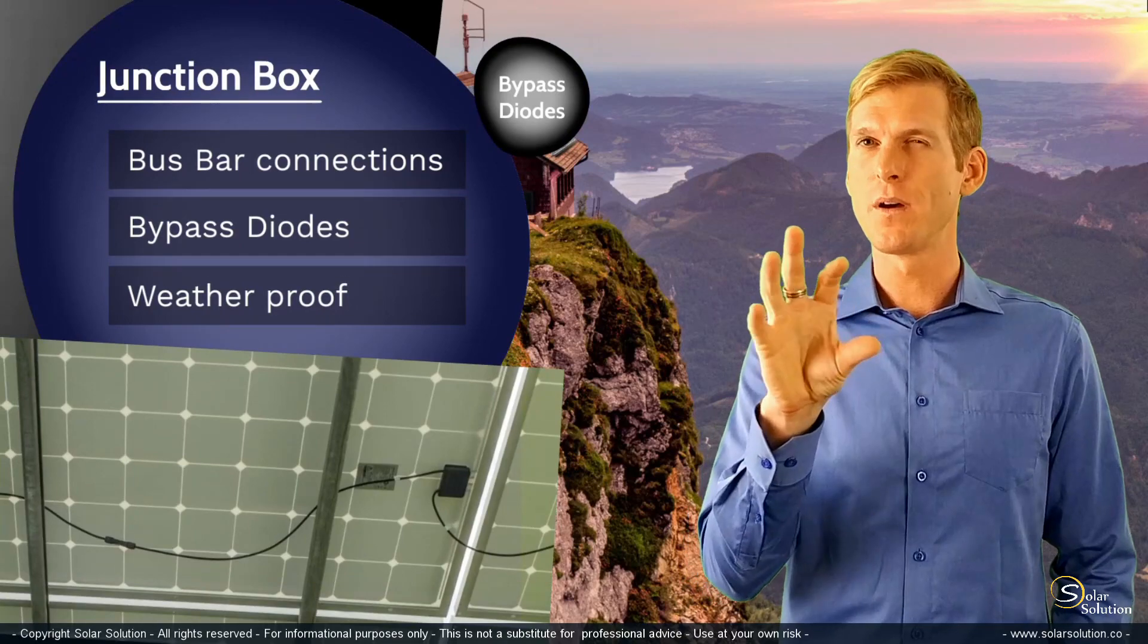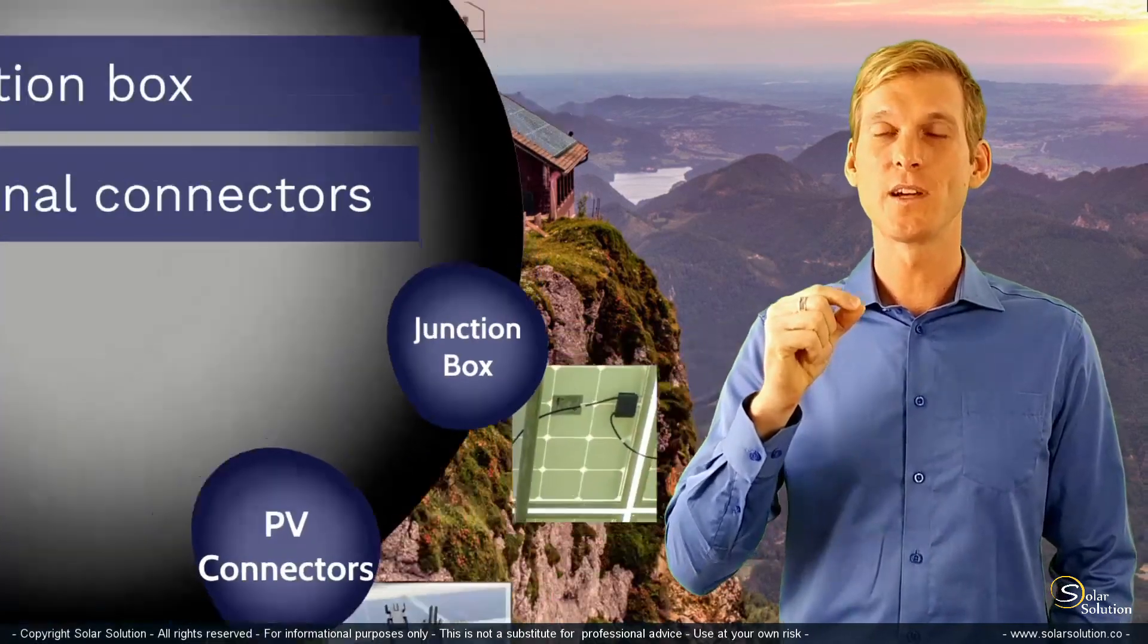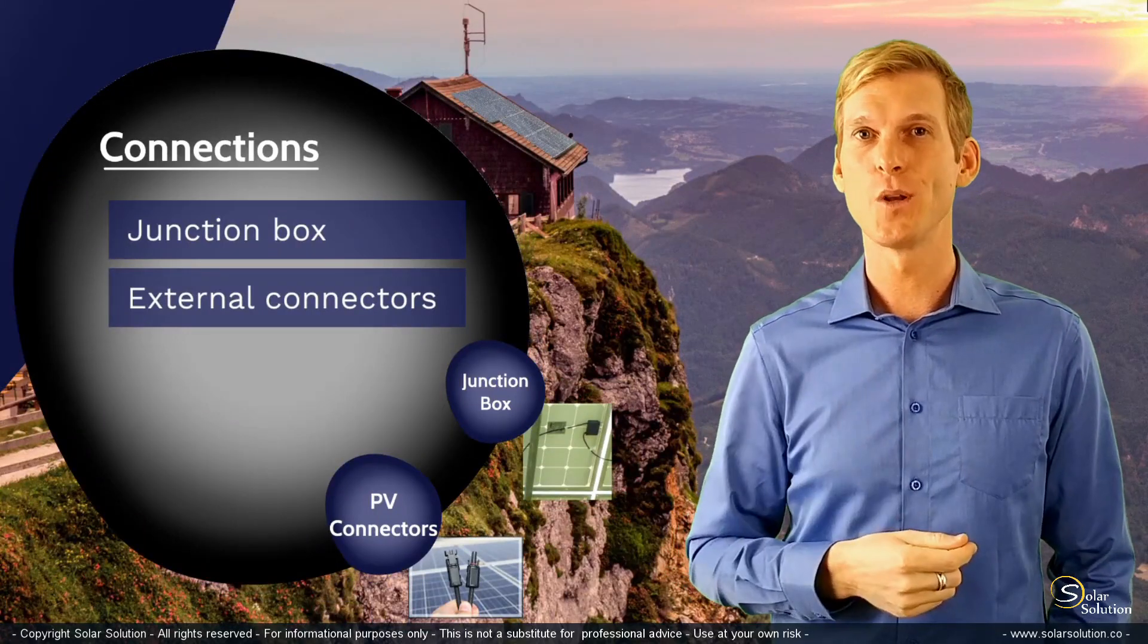We discussed the junction boxes and what they do. Now let's look at the very last topic and look at the external connections, the wires that come out of your solar panel.